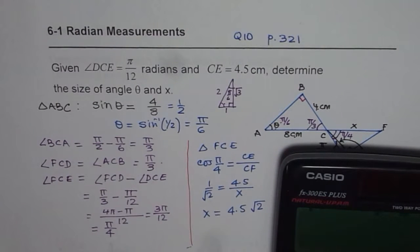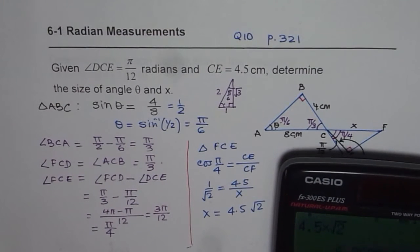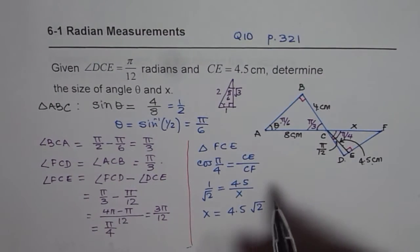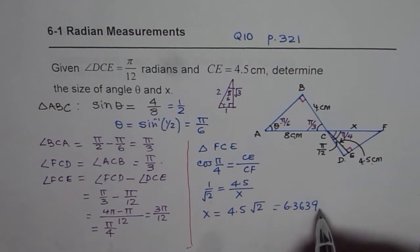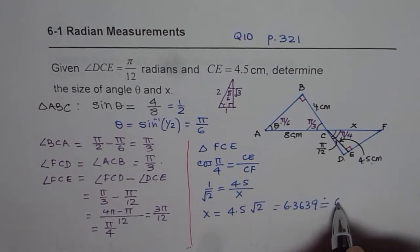So we can use the calculator now and find the answer. So let me do 4.5 times √2 equals to 9√2/2 which is 6.3639. So we can round it to 1 decimal place. Let us say 6.4 cm.